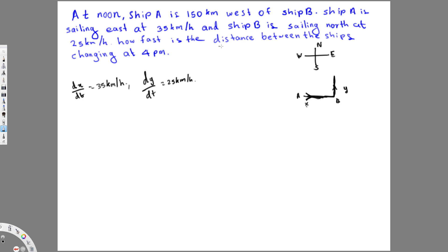The question is asking how fast is the distance between the ships changing at 4 p.m. They start at noon, so that's 4 hours. The distance between them is a diagonal — this hypotenuse changes as ship A moves east and ship B moves north.